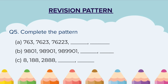Question 5: Complete the pattern. Part A: 763, next number is 7623, and the third number is 76223 — you have to write the next two numbers. Part B: 9801, next number is 98901, and the next number is 989901. Part C: 81882888 — you have to write the next two numbers.